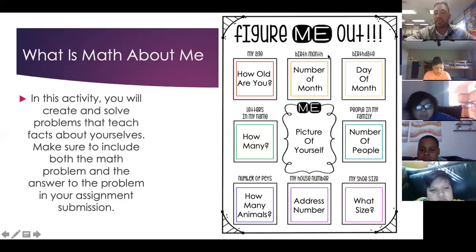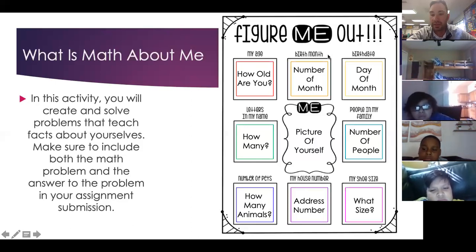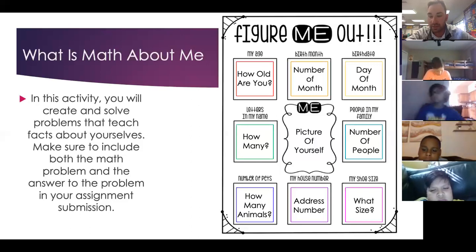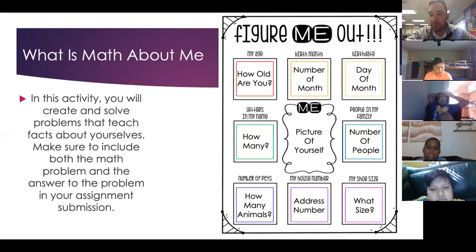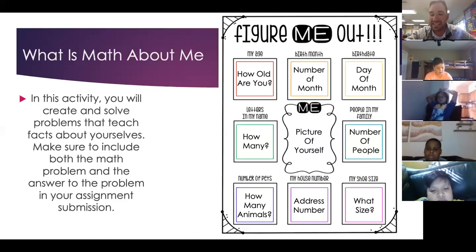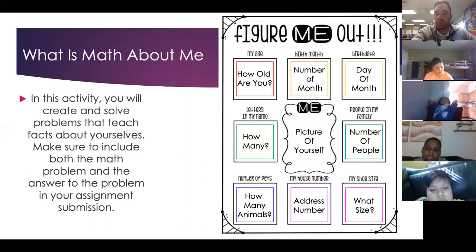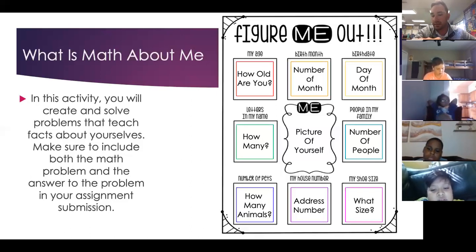Birth month means the number of the month. For example, I was born in August, so my birth month is eight — because August is the eighth month. Birth date would be the day you were born on. My birthday is August 16th, so that one would be 16. So for how old I am, it'd be 28. Birth month, my number would be eight. And my birth date would be the 16th.